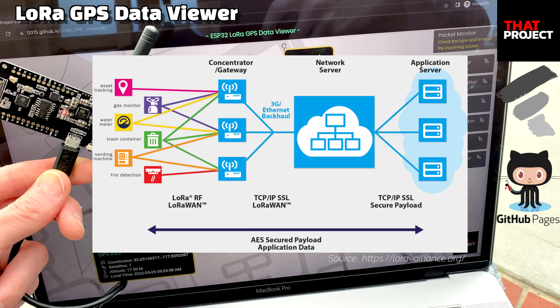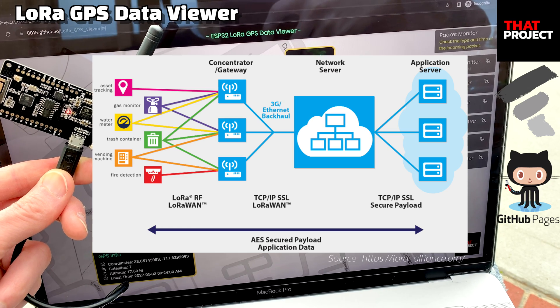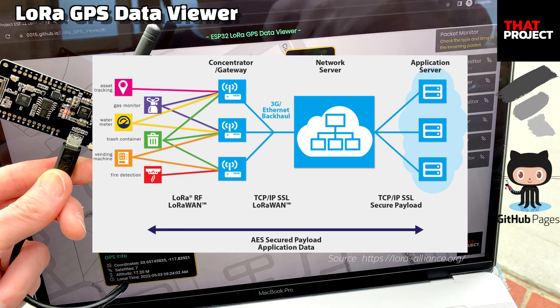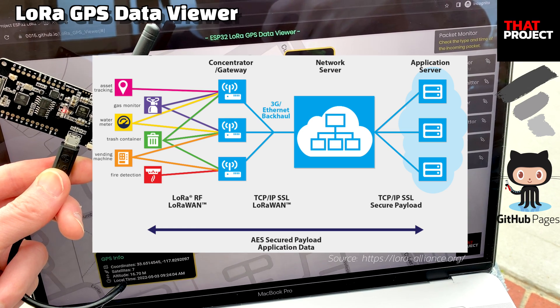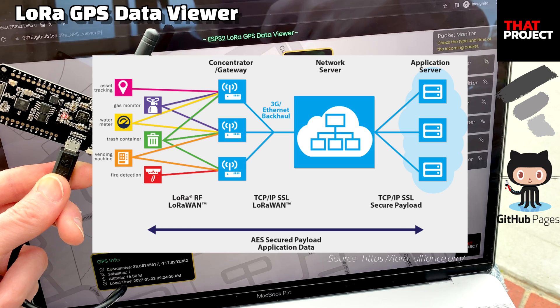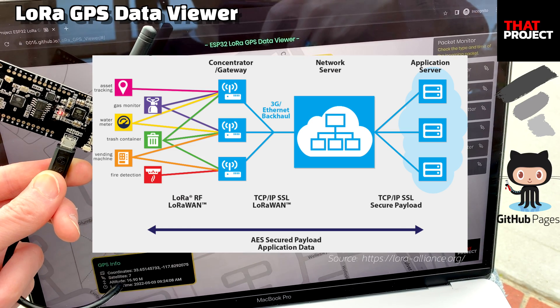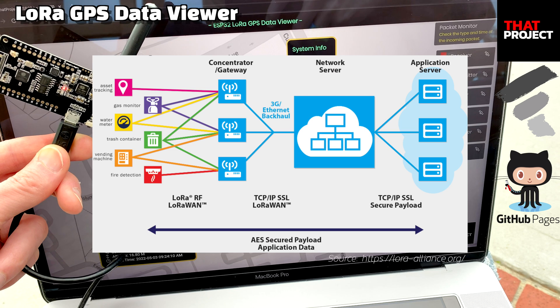The receiver device with the LoRa module will get this value and send the data to a server or store it in another repository. The receiver device is assumed to be in a location with a Wi-Fi connection.